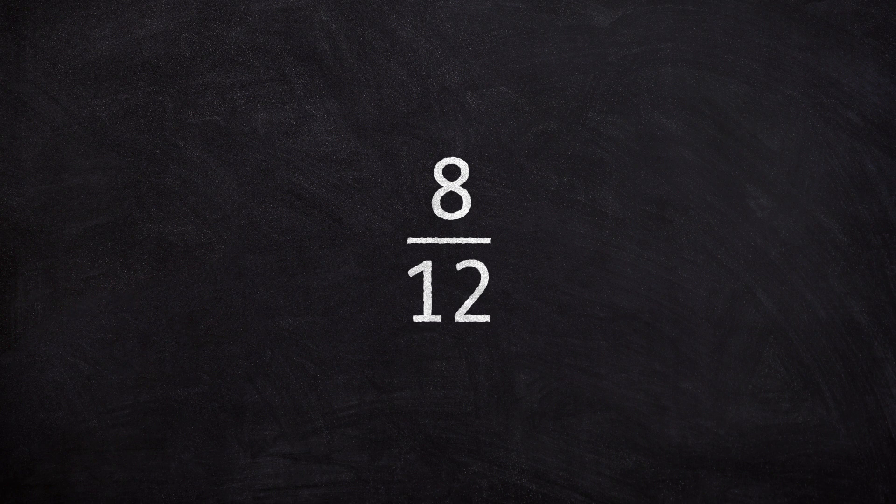To simplify the fraction, we must divide the numerator and denominator by the greatest common factor. This is the largest number that goes exactly into both numbers.